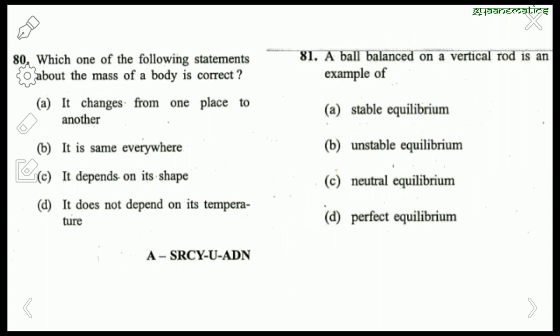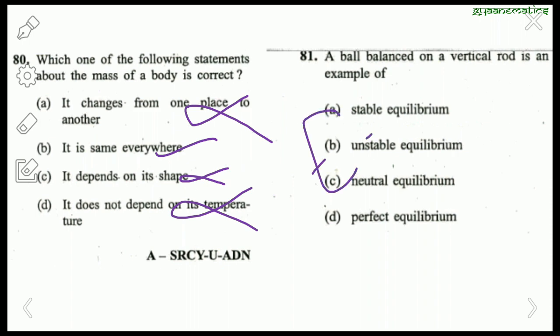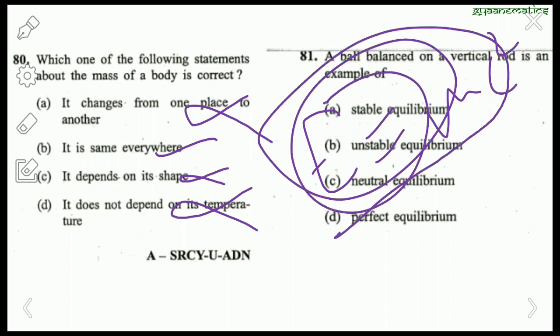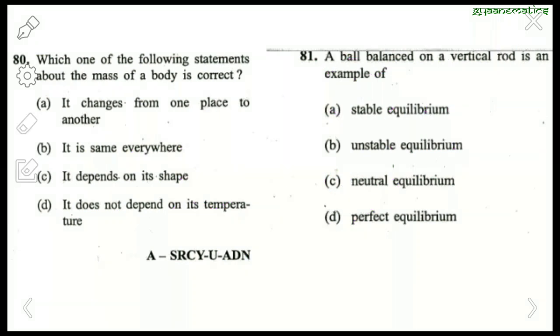Question 79: Which statement about mass of a body is correct? 'It changes from one place to another' — no, it does not. 'It is the same everywhere' — this is correct. 'It depends on its shape' — wrong. 'It depends on its temperature' — also somewhat debatable due to E=mc², but for standard purposes the right answer is that mass is the same everywhere.